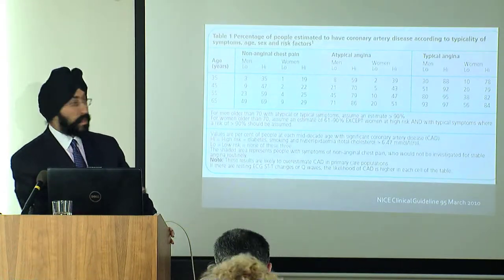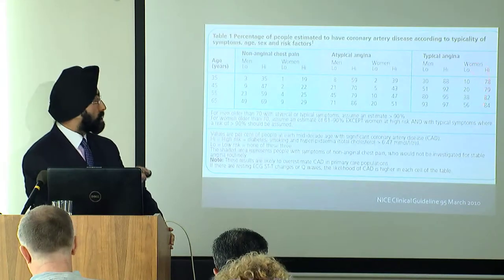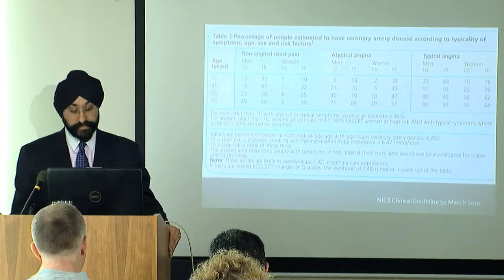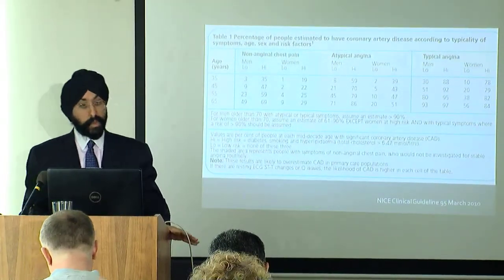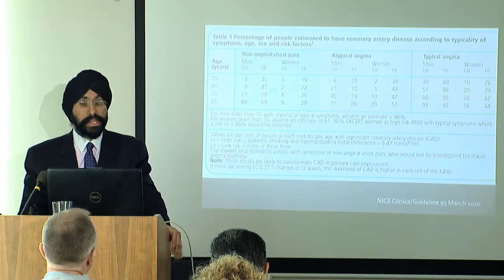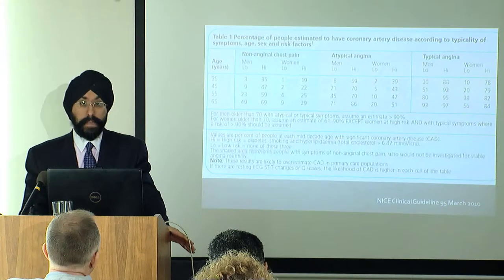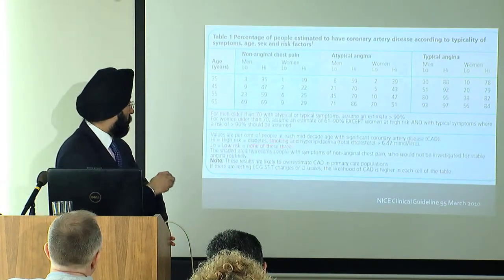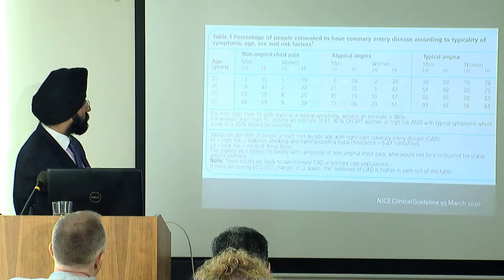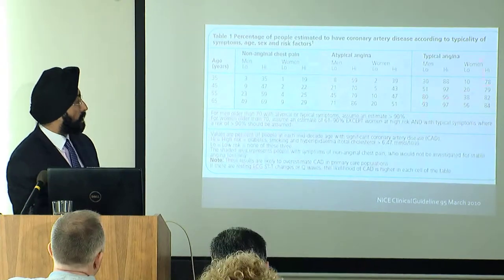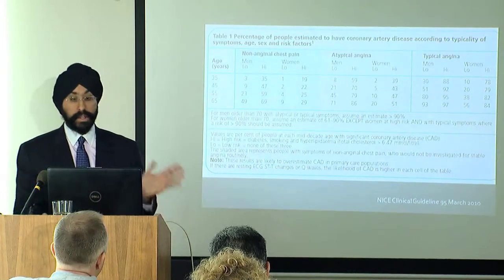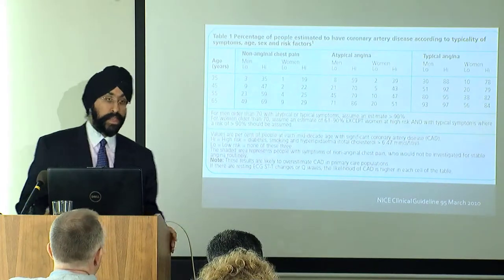NICE has come up with a slightly complicated table to work out what the pretest probability of coronary artery disease is, based on the symptoms and features of angina. If angina is typical, patients are generally more likely to have a higher pretest probability of coronary artery disease. We can also split patients into high and low risk — the higher risk patients are those with the most important risk factors: smoking, diabetes, and hyperlipidemia.